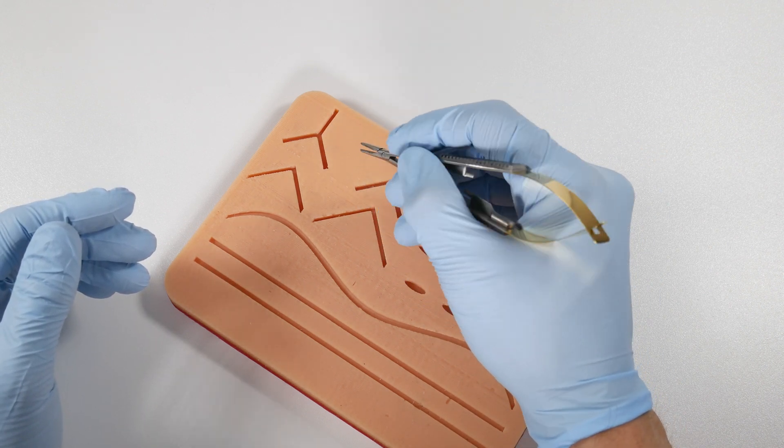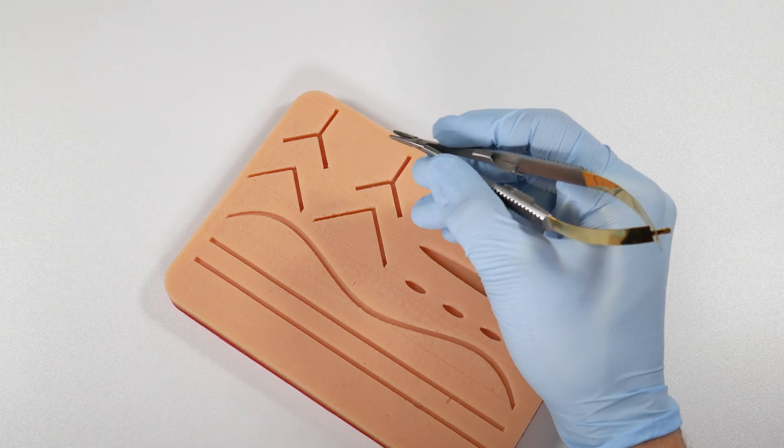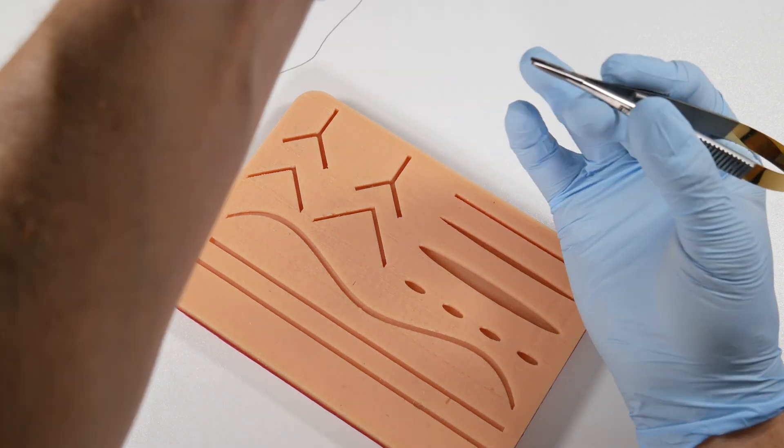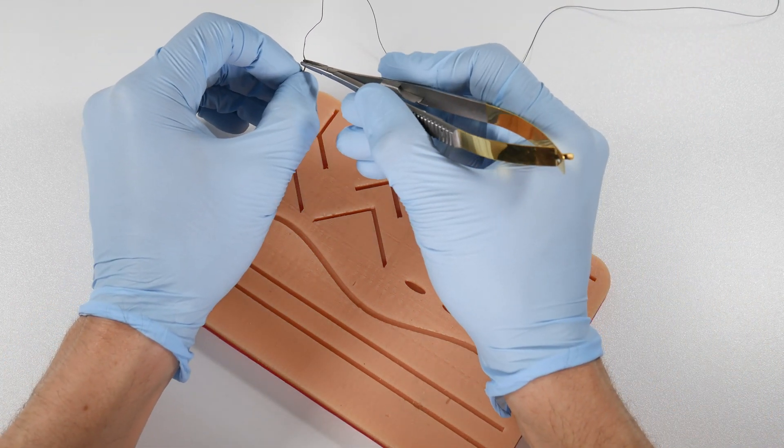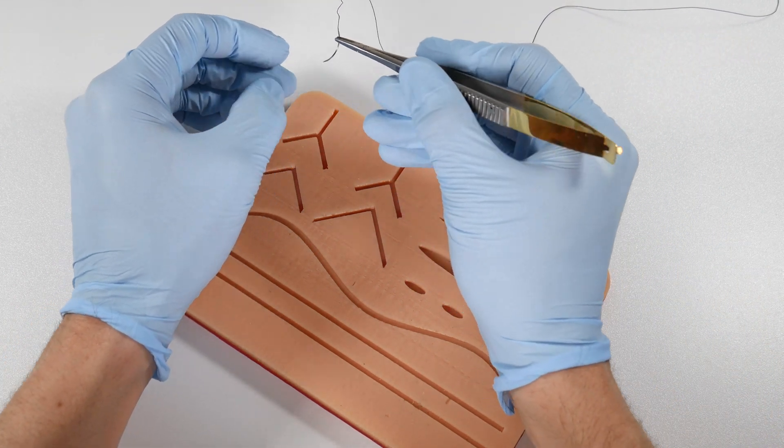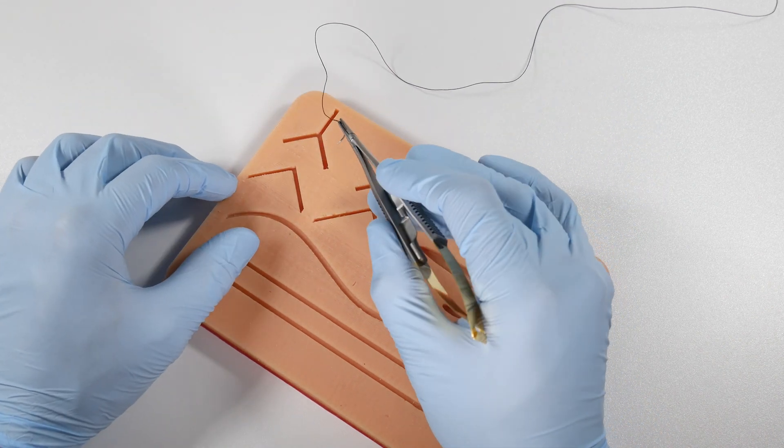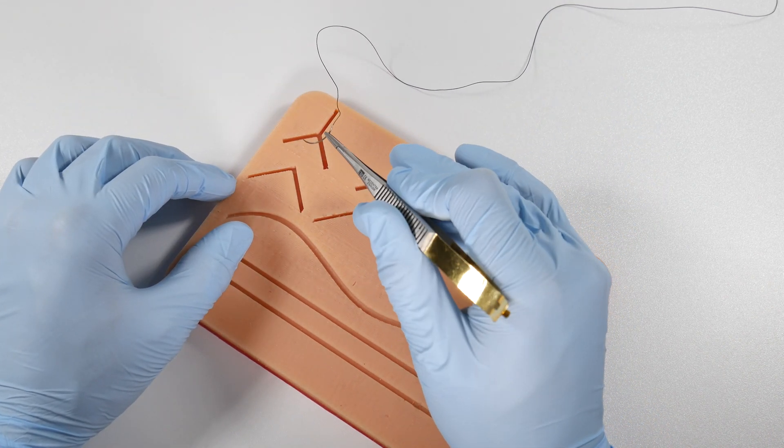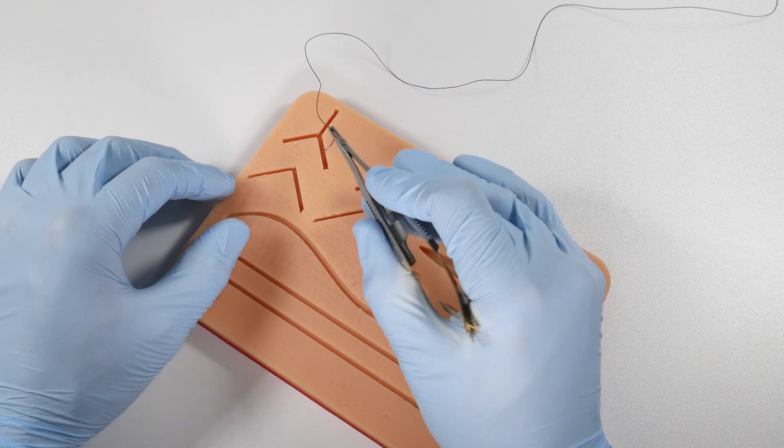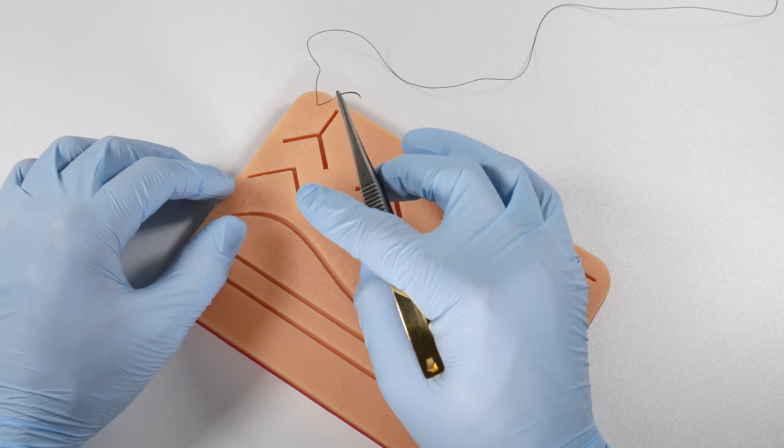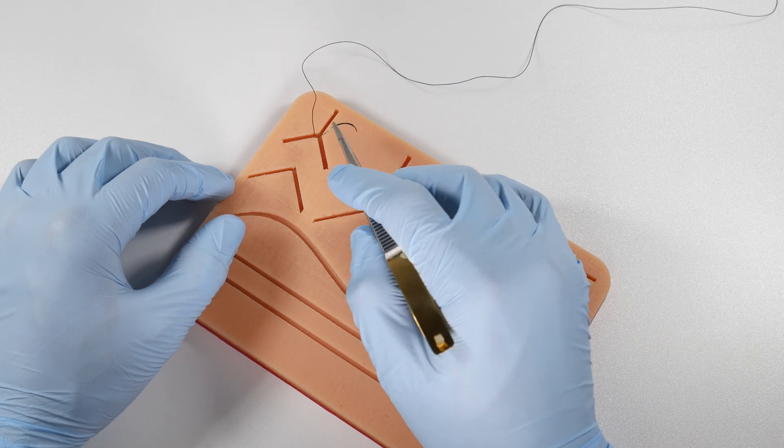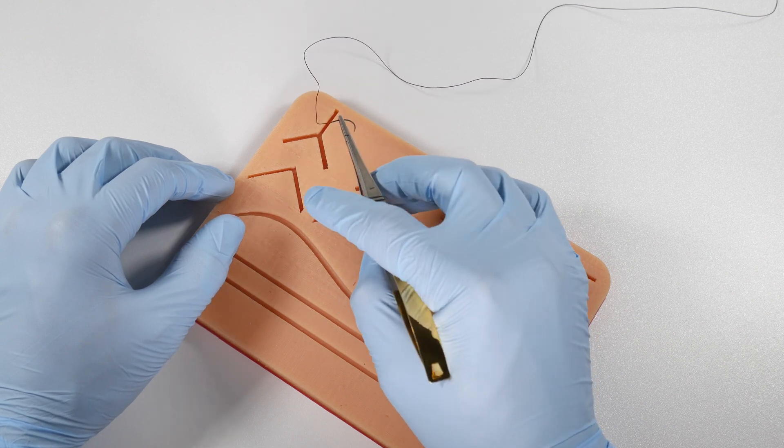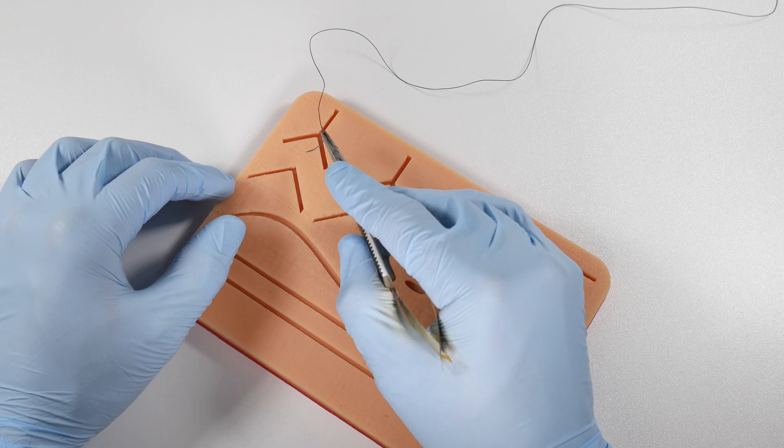If we look at passing a suture needle through the tissue, we'll grasp that just beneath that swaged end. One click locks it. Now you can enter the tissue. Look at the range of motion for a second—watch that needle. You can do like a full 180 degrees basically without really moving my wrist.